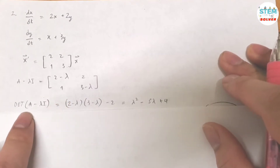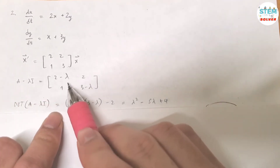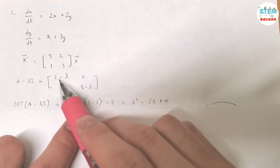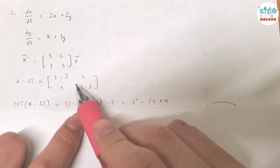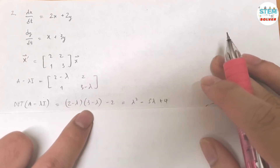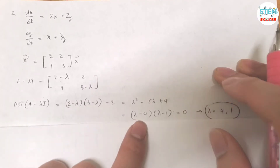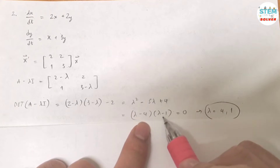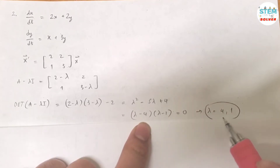Then you find the determinant of A minus lambda I, which gives you (3 minus lambda)(3 minus lambda) minus 2 times 1. After you distribute and simplify, rewrite it in factored form, set it equal to 0, and solve for lambda. You will get lambda equals 4 and 1 — these are your eigenvalues.